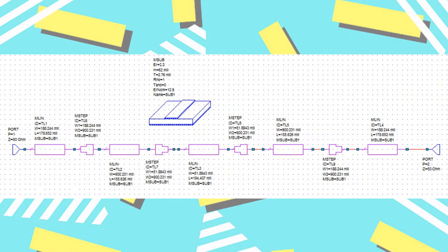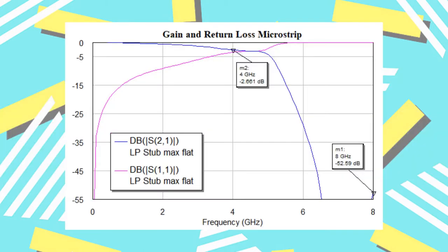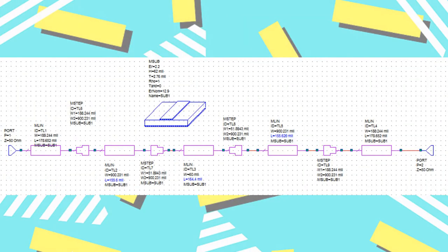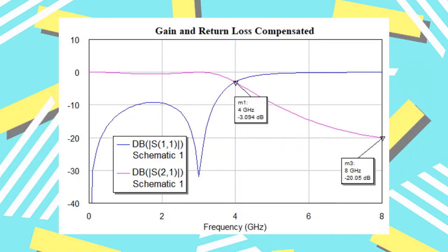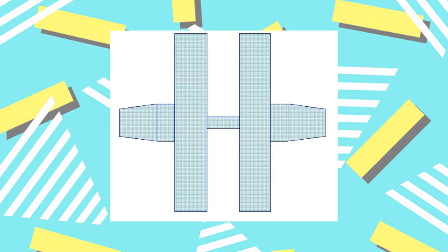After simulating the ideal transmission lines, the filter was designed in microstrip with uncompensated discontinuities. Shown is the gain and return loss for the filter implementation with uncompensated discontinuities. Finally, the discontinuities were compensated — the lines were made smaller to overcome the step-in-width discontinuities. Shown is the gain and return loss for the compensated filter. The physical layout was then exported from Microwave Office.